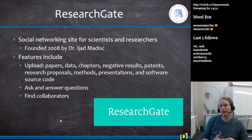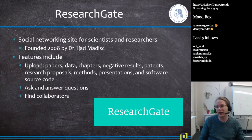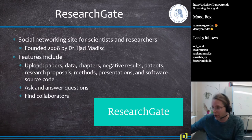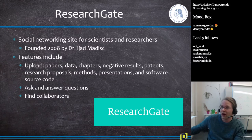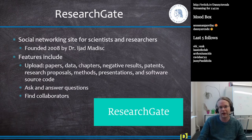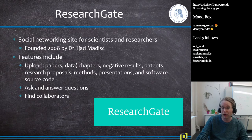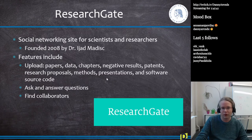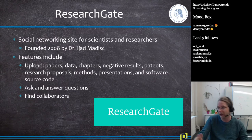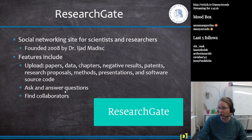Another platform is ResearchGate — a social networking site for scientists and researchers, founded in 2008. It has interesting features: you can upload papers, data, book chapters, negative results, patents, research proposals, methods, presentations, software source code, and even conference posters. It also has an ask-and-answer forum where you can find collaborators or ask questions on an open forum and other scientists can respond.